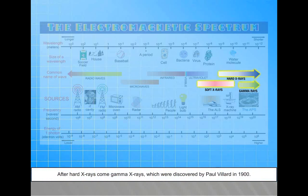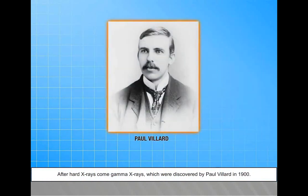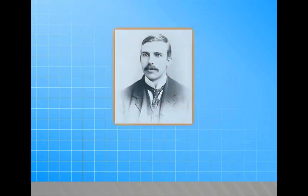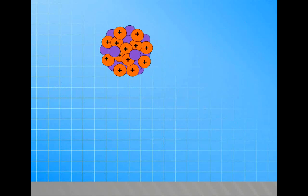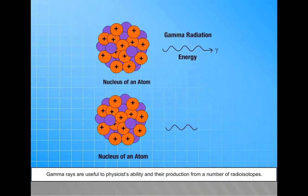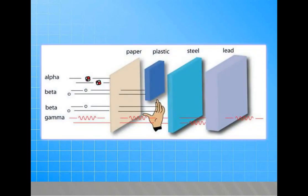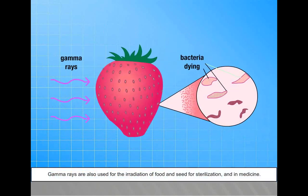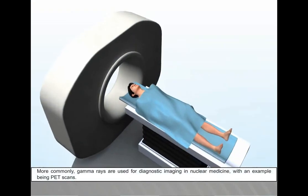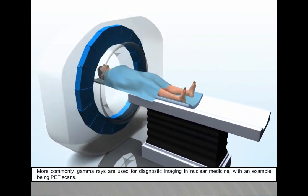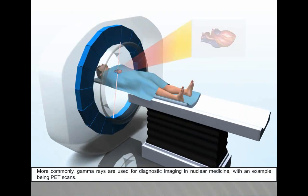After hard X-rays come gamma rays, which were discovered by Paul Villard in 1900. These are the most energetic photons, having no defined lower limit to their wavelength. Gamma rays are useful to physicists thanks to their production from a number of radioisotopes. Gamma rays are also used for the irradiation of food and seed for sterilization, and in medicine. More commonly, gamma rays are used for diagnostic imaging in nuclear medicine, with an example being PET scans.